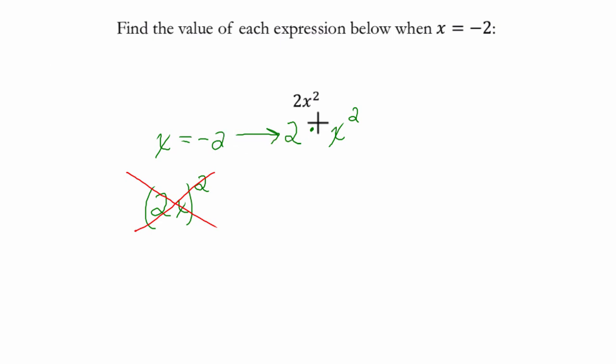When it's not written in parentheses and you see a coefficient—that's what this number is in front of the variable—we first square x and then multiply it by the coefficient. So here that's going to be 2 times, in our case x is negative 2, to the second power.